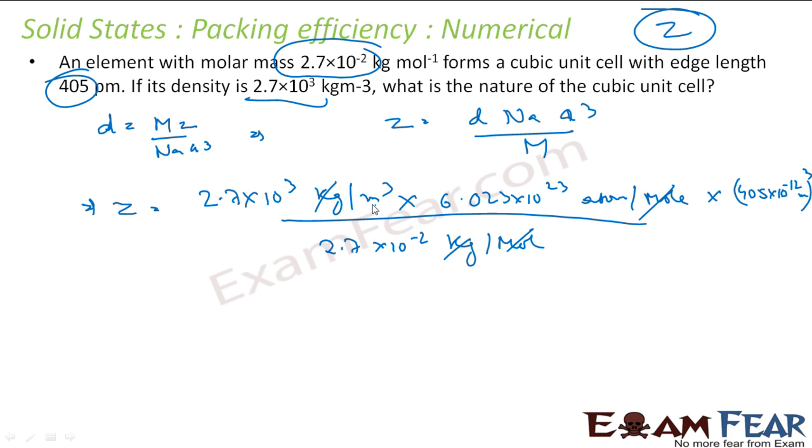Mole and mole cancel, kg and kg cancel, meter cube and meter cube cancel. So with this you solve, you get 3.84 × 10^-2, which is almost equal to 4. Since it is almost equal to 4, it is CCP.